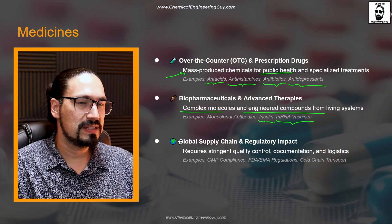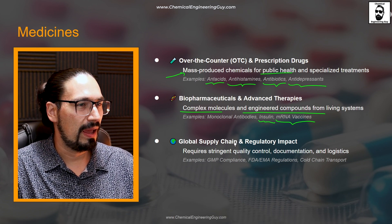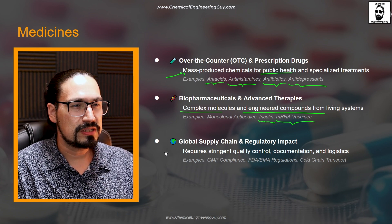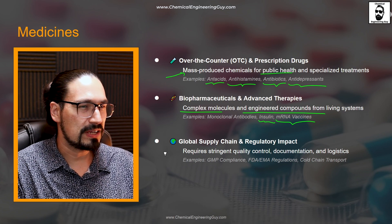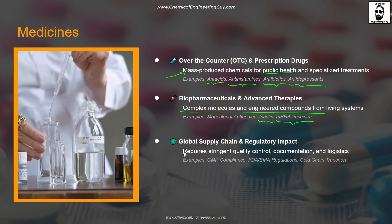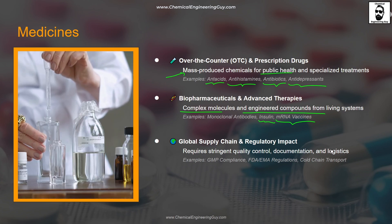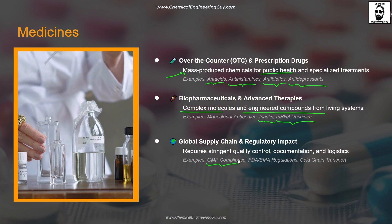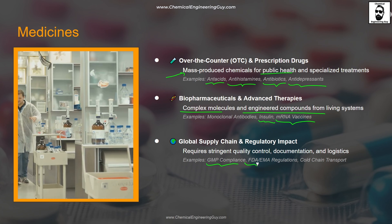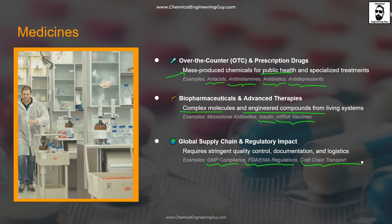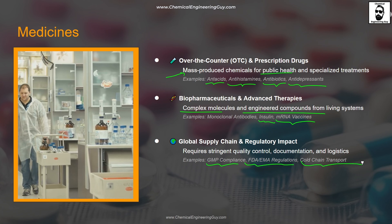Last but not least, global supply chain and regulatory impact. This is mostly paperwork, documentation, and quality control. We're talking about GMP compliance, FDA regulations, and of course the chain transport and all the logistics used to ensure that the final product is delivered to the end user.